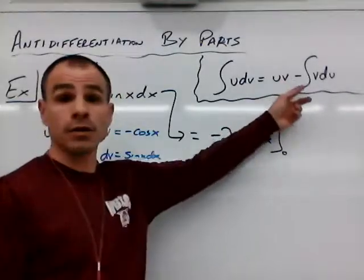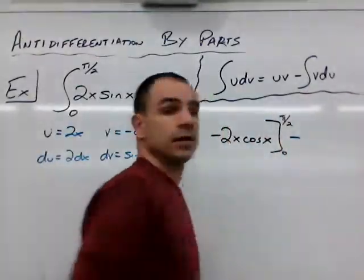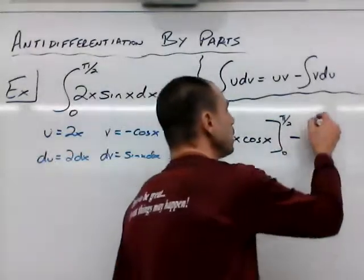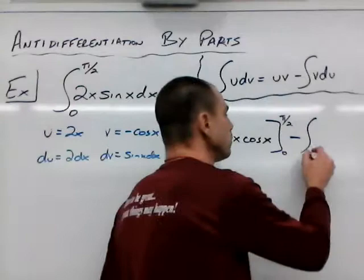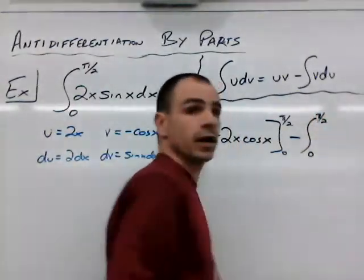But we're not done with our parts because we still have the difference, and we have to bring in the anti-derivative. Our bounds stay the same, 0 and pi over 2.